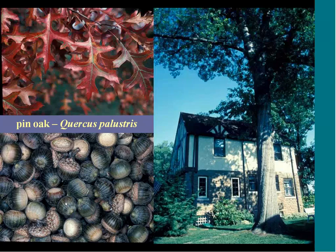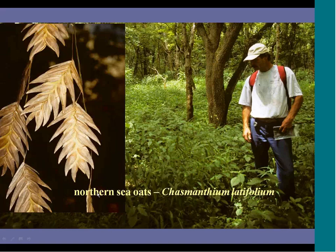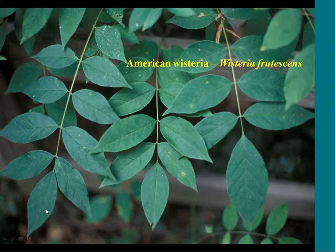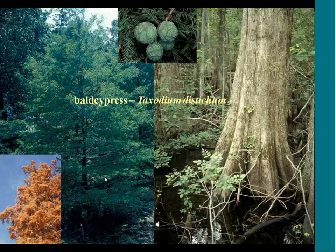Pin oak, despite its name Quercus palustris meaning 'swamps,' actually tolerates extreme dryness as well. Some additional species native to the East but not New York include northern sea oats, a really nice floodplain grass tolerating extremely shady conditions, yellow root, and native American wisteria — the floodplain wisteria — a spectacular plant with beautiful purple flowers. Virginia sweetspire has nice summer flowers and fall color that rivals burning bush. Bald cypress is a tree that'll live for 2,000 years in 10 feet of water — about as flood-tolerant as anything in North America except mangroves.